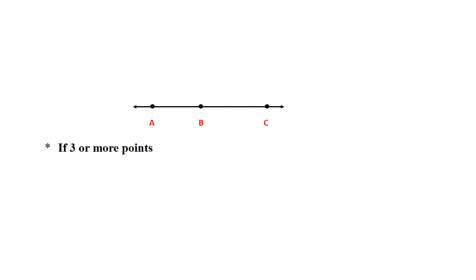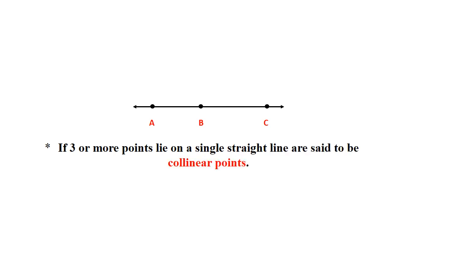If three or more points lie on the same single straight line, they are said to be collinear points. Here we can see three points: point A, point B, and point C — and all these points are in a straight line. So points A, B, and C are called collinear points.